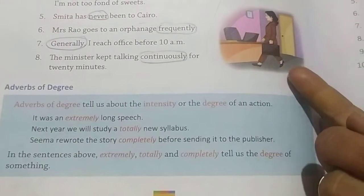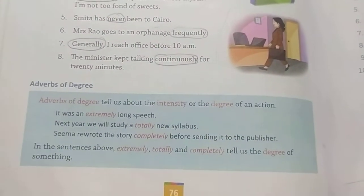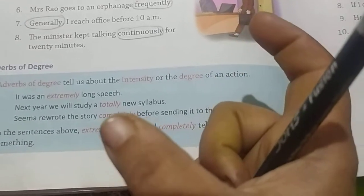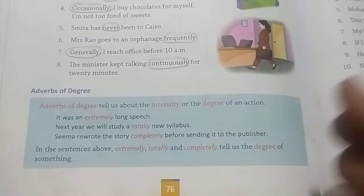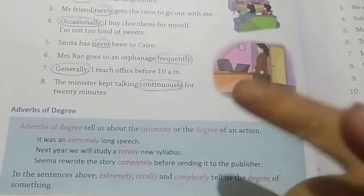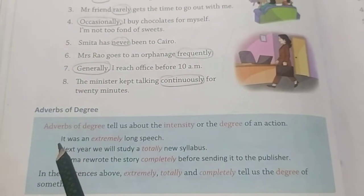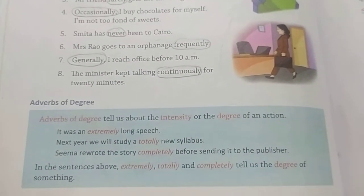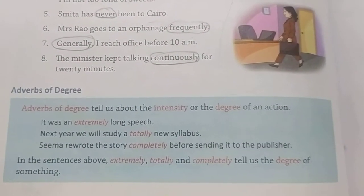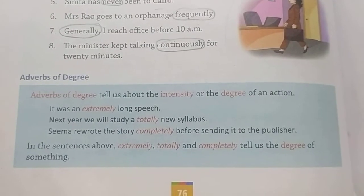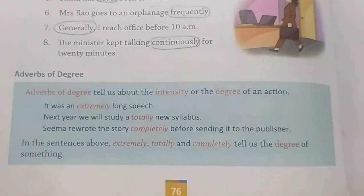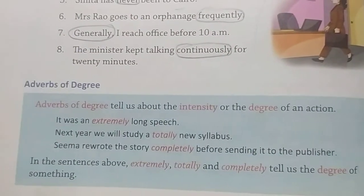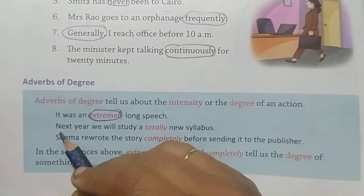Do not get confused between frequency and degree. Frequency tells us how many times an action happened, while degree tells us the intensity or the way in which the action happened. So 'how' doesn't apply to degree the same way it does to manner. In 'it was an extremely long speech', extremely is the adverb of degree.